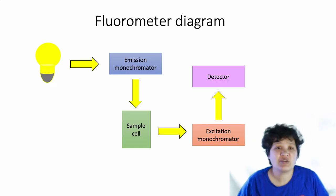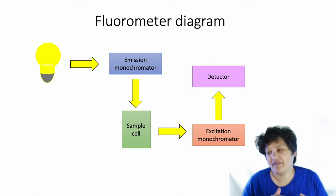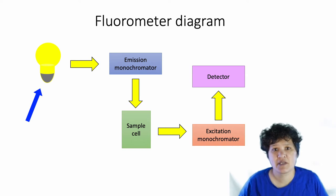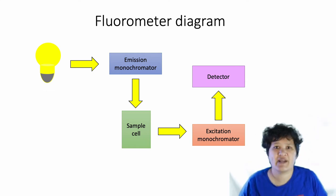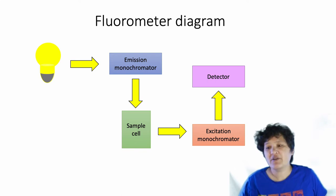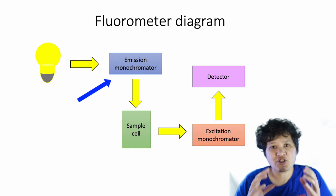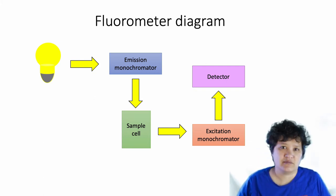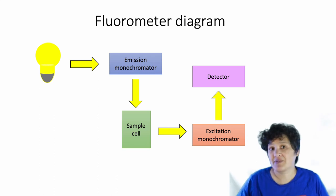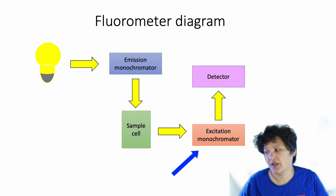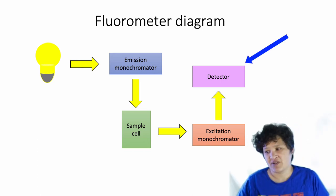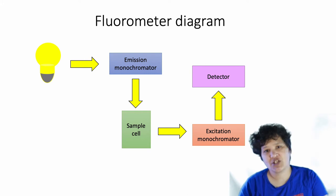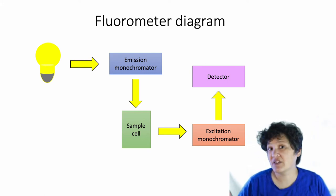Inside a fluorometer, first you have a source generating all your wavelengths — this can be UV or visible, or both — such as a tungsten source or a deuterium source. Then you have an excitation monochromator, which controls the wavelengths going into your sample. That passes through the sample cell, and then you have another monochromator, the emission monochromator, which controls what wavelengths you're measuring the intensity of. That then goes to the detector. You can scan both the excitation and emission wavelengths by using these two monochromators.